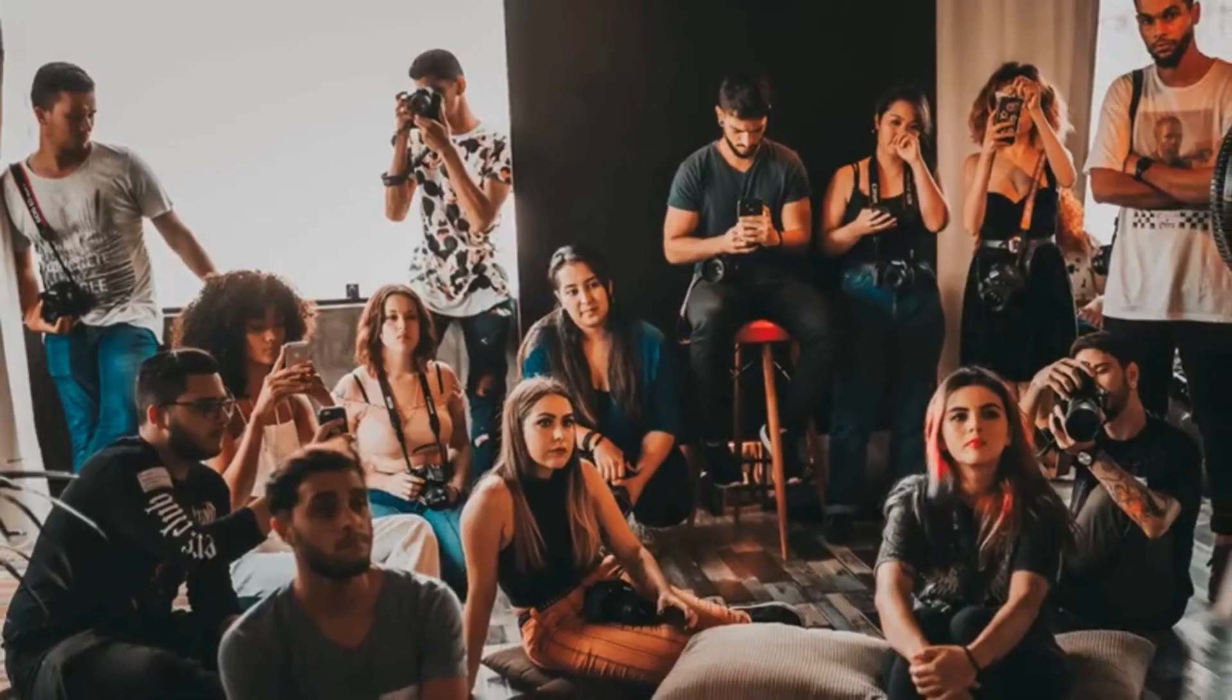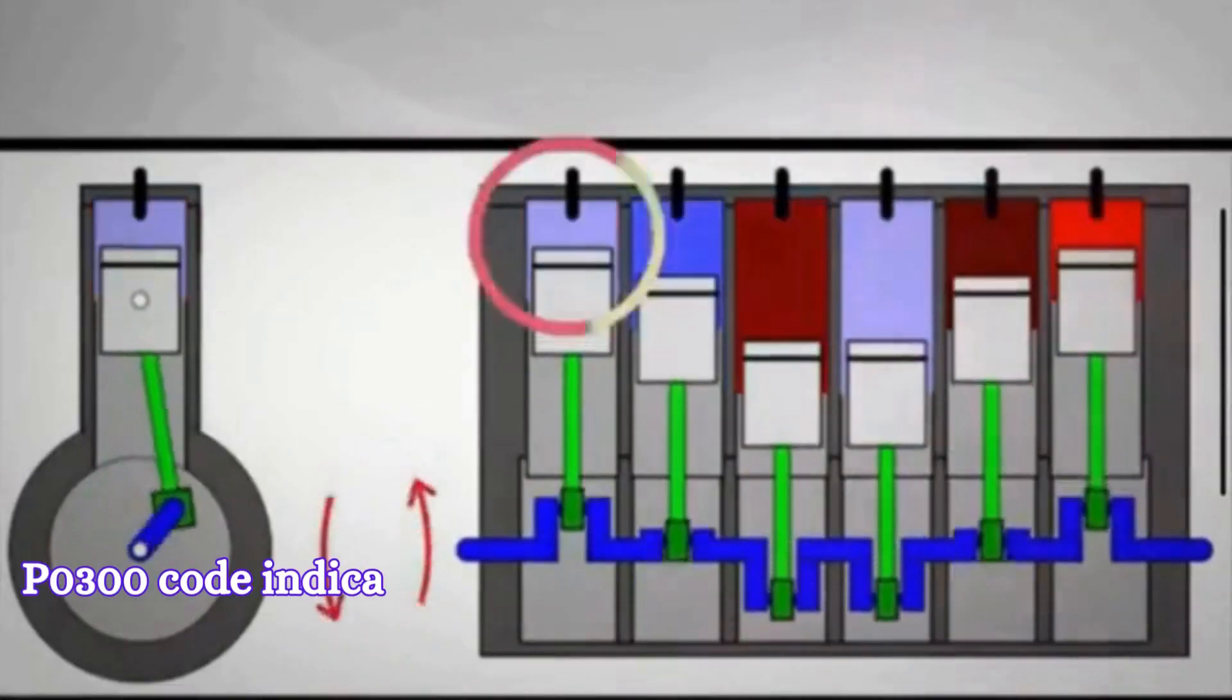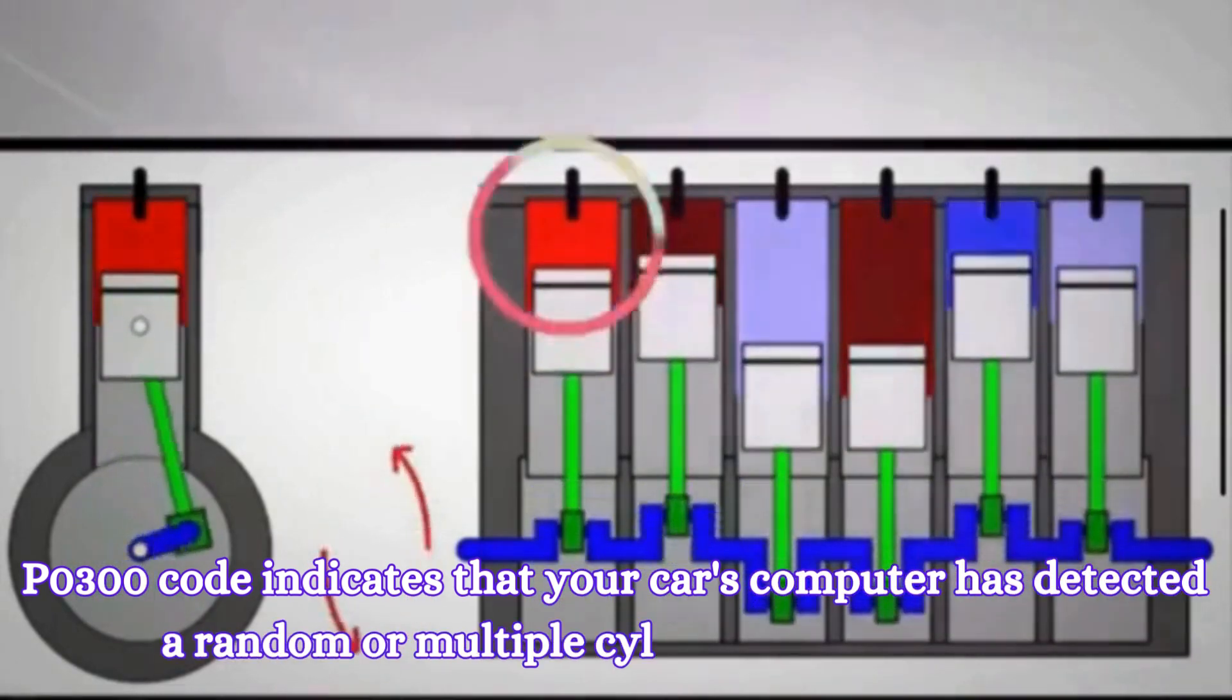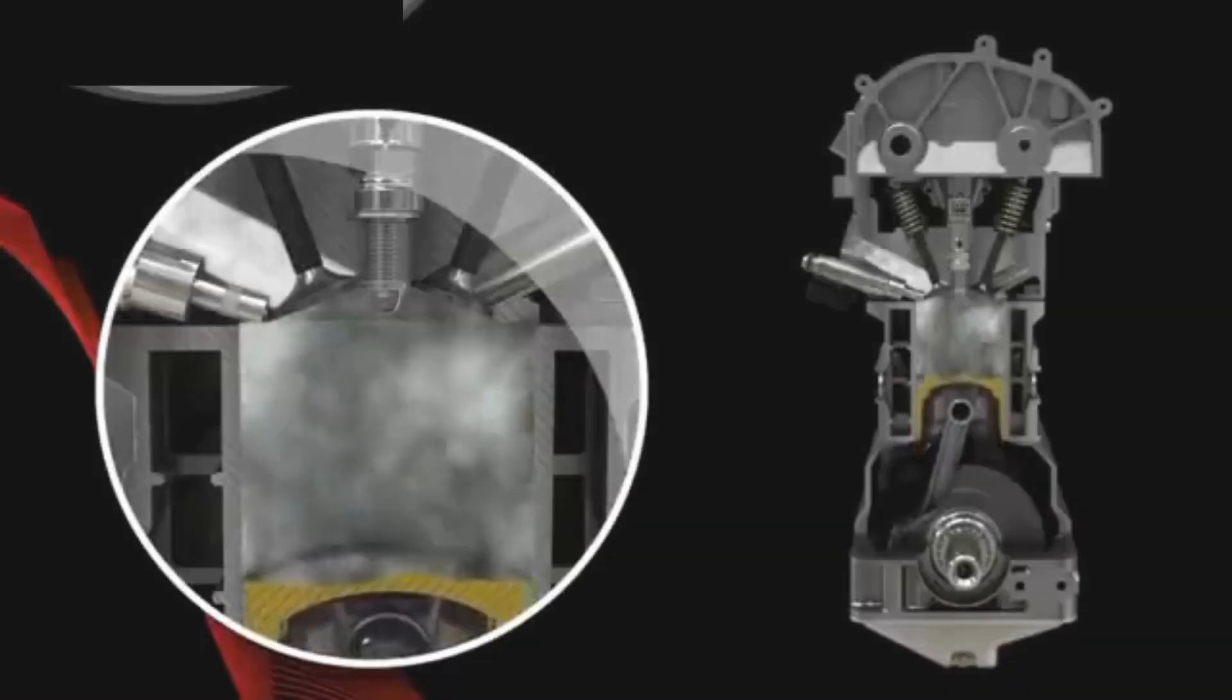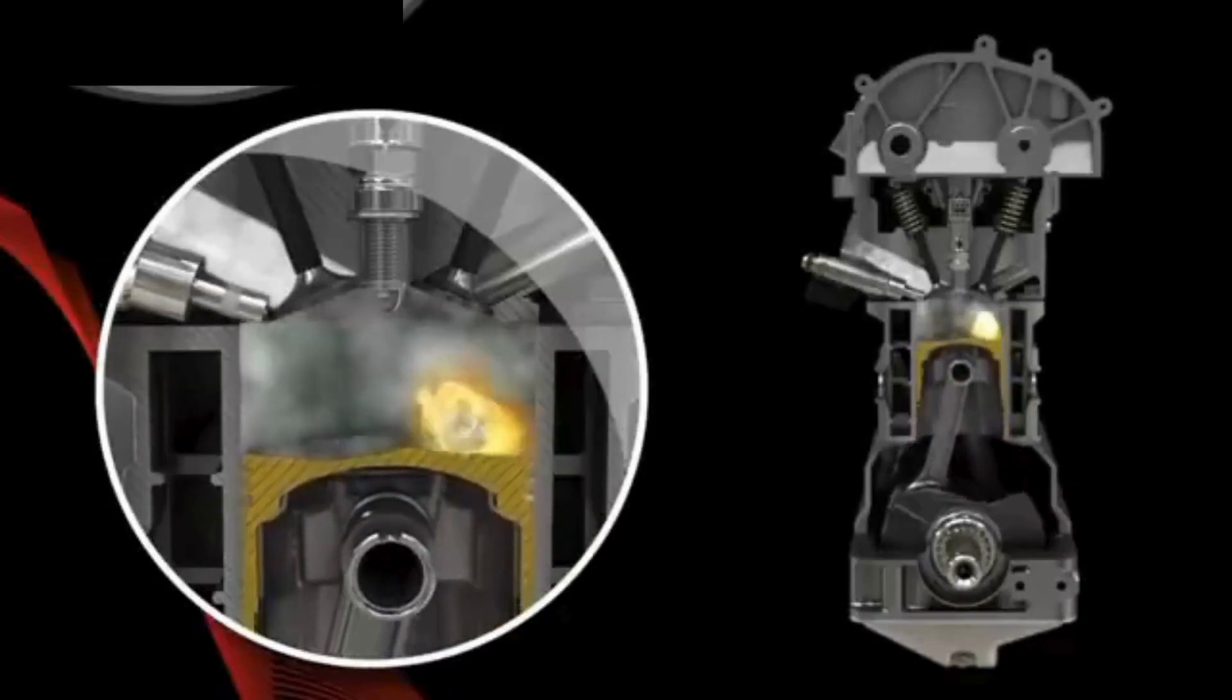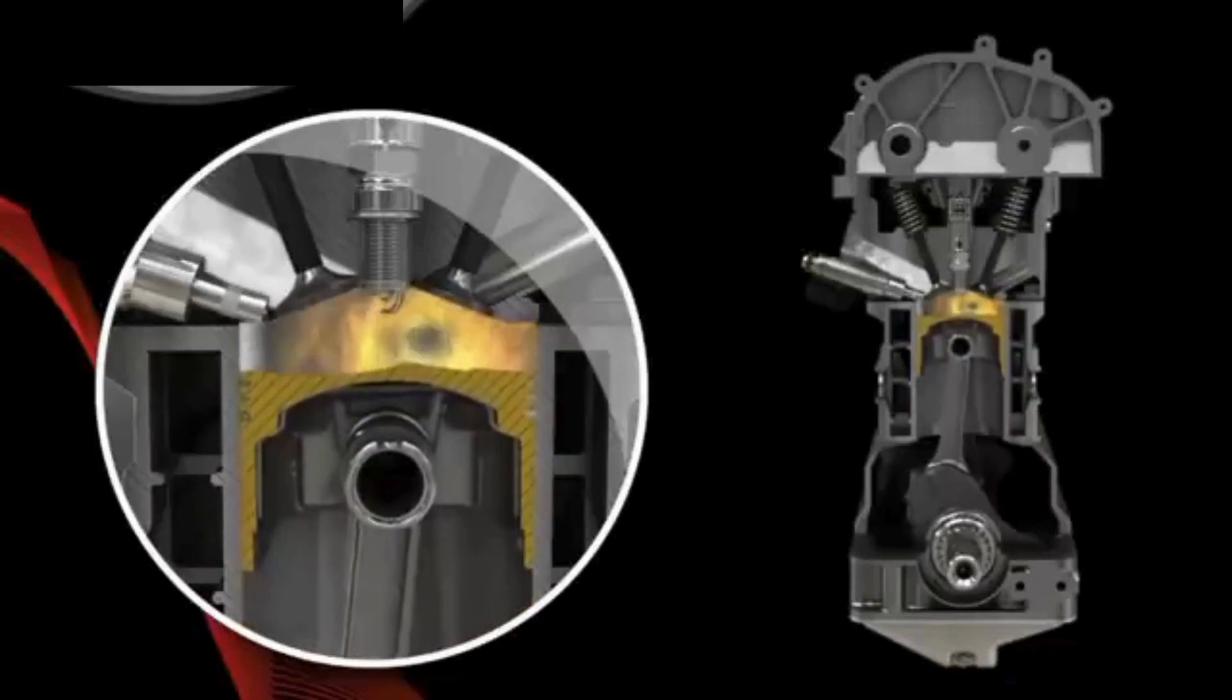First off, what is the P0300 code? The P0300 code indicates that your car's computer has detected a random or multiple cylinder engine misfire. An engine misfire occurs when one or more of the engine's cylinders fail to ignite the air-fuel mixture at the correct time or fail to ignite it at all. This disruption in the combustion process leads to incomplete or inefficient combustion.